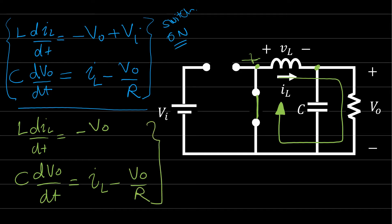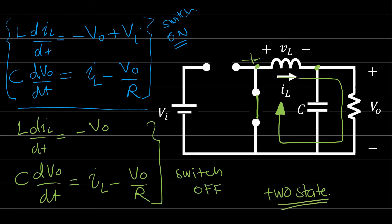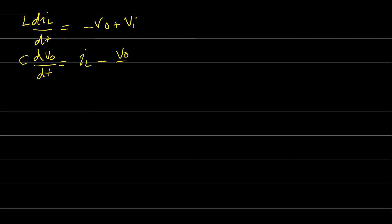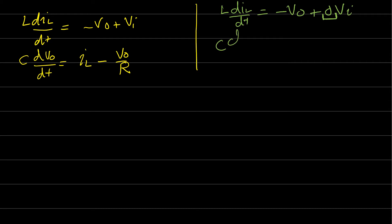Since the buck converter has two states — on and off — to model this converter we need to combine these two states into one unified equation. When the switch is on: L di_L/dt = -V_out + V_in, and C dV_out/dt = I_L - V_out/R. When the switch is off: L di_L/dt = -V_out, and C dV_out/dt = I_L - V_out/R.